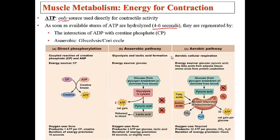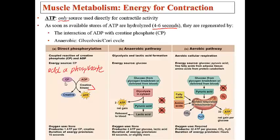There are three primary pathways for energy generation so that we can continue muscle contraction for more than four to six seconds. The first type is called direct phosphorylation of ADP by creatine phosphate. Phosphorylation simply means to add a phosphate — this is a way to regenerate ATP. Creatine kinase is the enzyme used to add the phosphate to ADP, giving us ATP available for a short duration.